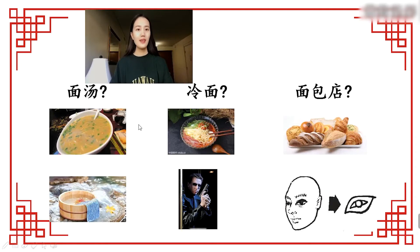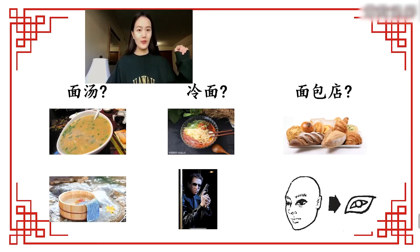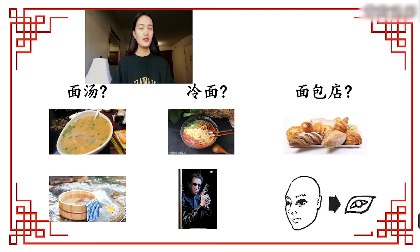Why do I say it has two different meanings? Let's see. First, 面汤 (miàn tāng) — noodle soup — it can be eaten. But in another way, it's used for taking a shower. Second is a kind of Chinese noodles which is not that hot.